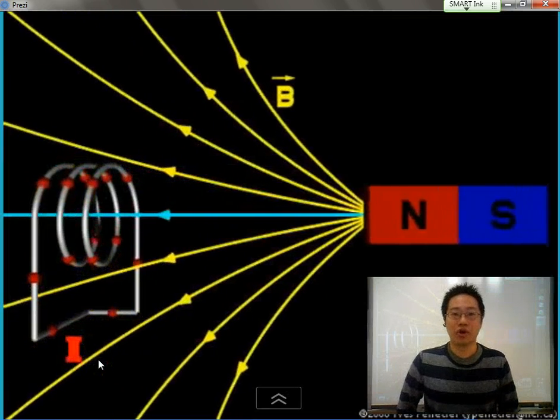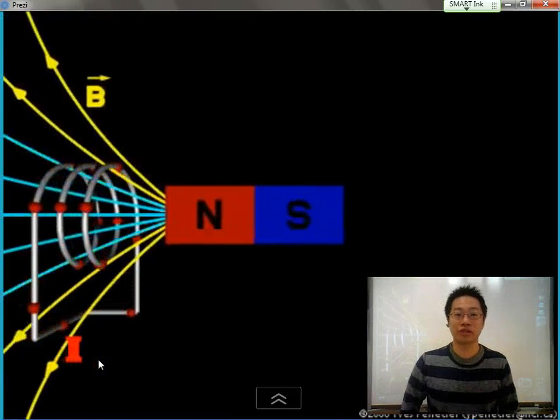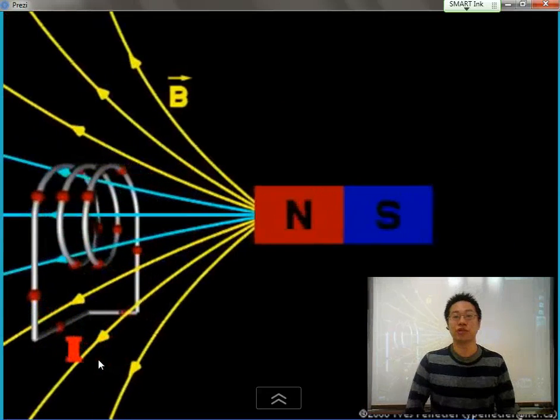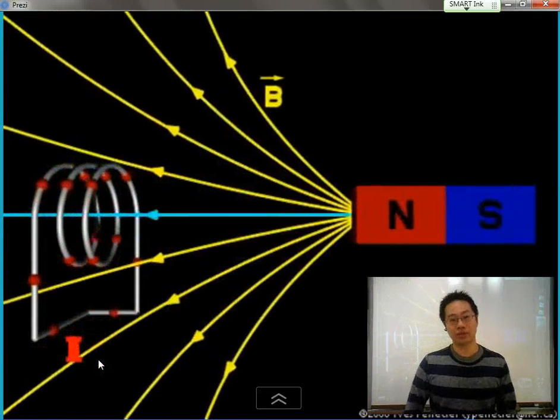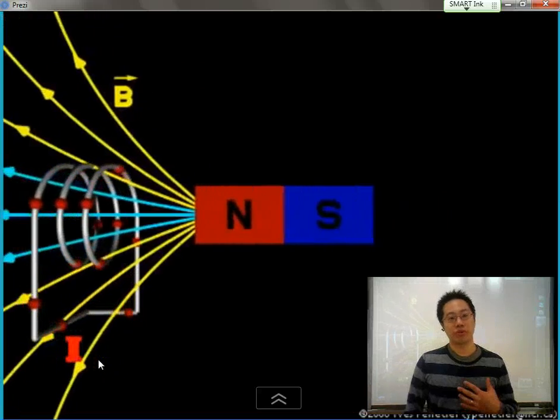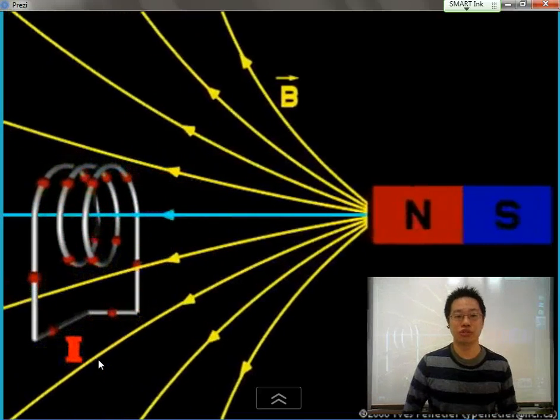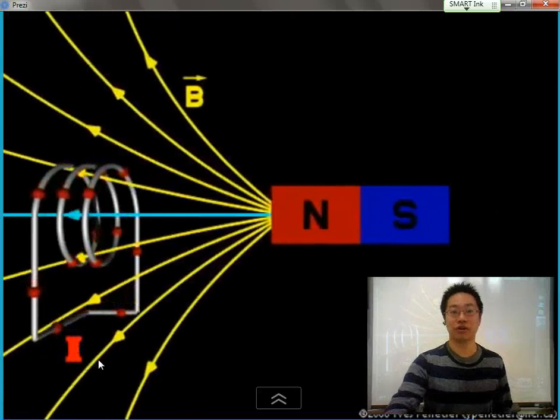We've already seen how a changing magnetic flux will create a current or really a potential difference within the wire, within the loop, and that potential difference of course leads to a current. But whether the magnetic flux is increasing or decreasing will change the direction of our current.